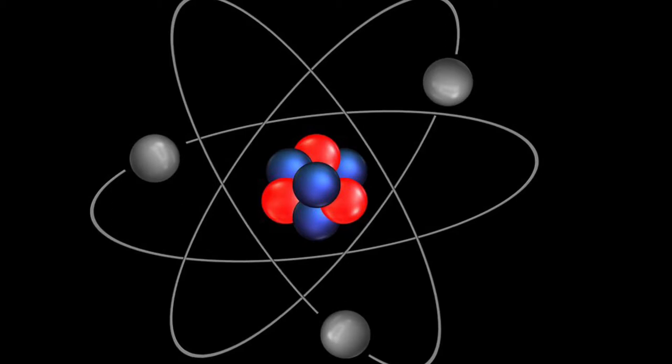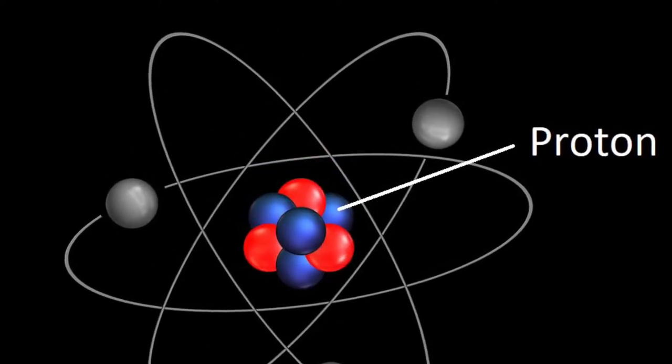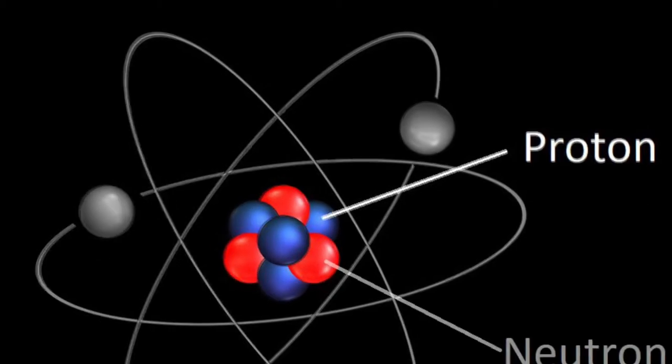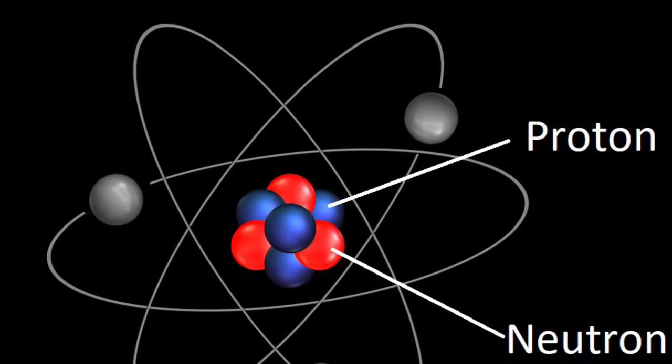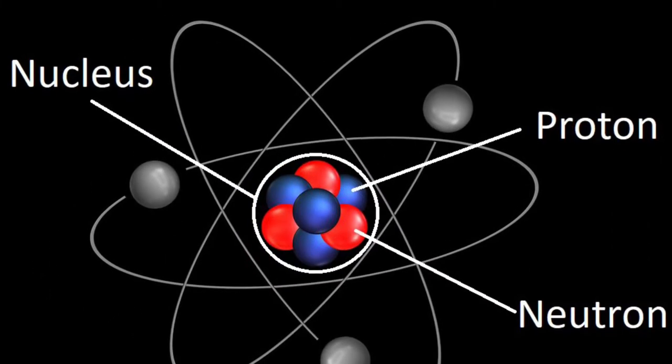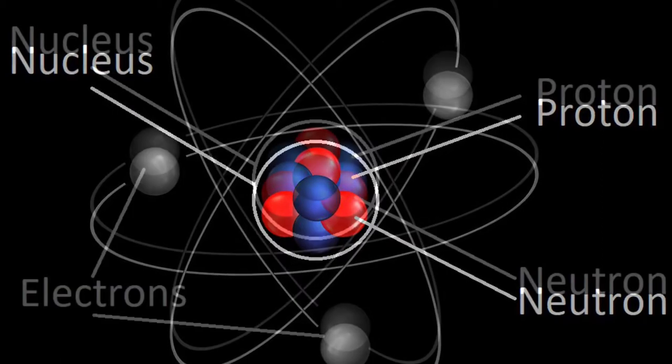Atoms are the tiny, tiny building blocks that make up everything we know. Atoms are made up of things called protons, neutrons, and electrons. Protons and neutrons make up the center of the atom, which is called the nucleus.